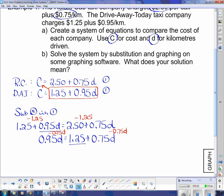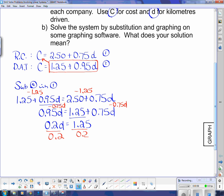So when I make that subtraction, I get 0.2d. And on the other side, I have $1.25. And lastly, I divide both sides by 0.2. And what this tells me is that d equals 6.25.